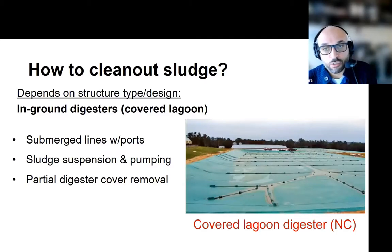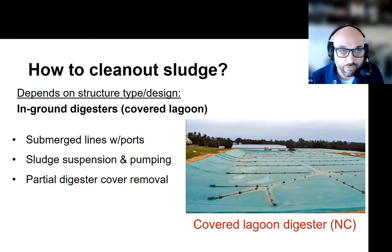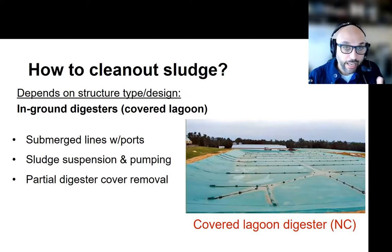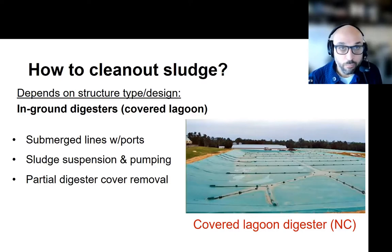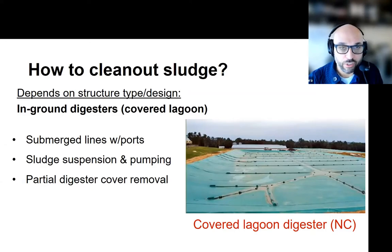When we move into a covered structure - using the covered lagoon as an example - accessibility of the sludge is the primary barrier. Generally, before adding covers to lagoons or covered digesters, installing submerged lines with ports at uniform distances to allow for pumping out this material is important. Alternatively, installing plumbing at different points where high horsepower suspension pumping would be required to slurry the digester before pumping out the sludge. Or if both fail, a partial or complete removal of the cover to recover the sludge similar to what we've seen in open lagoons.